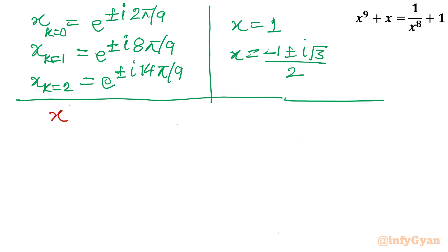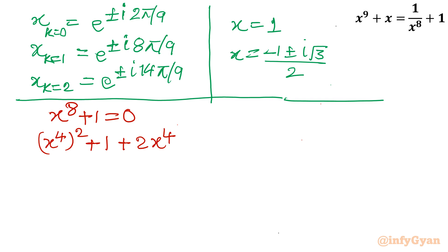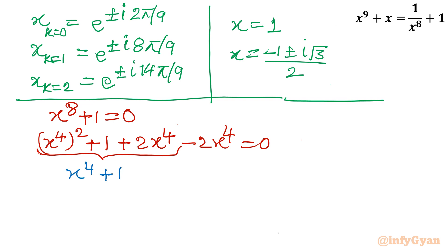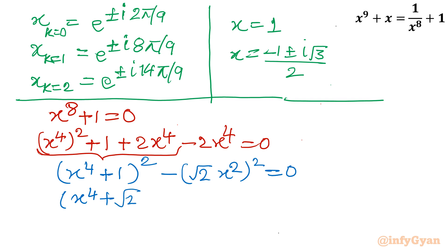Now for the second equation: x^8 + 1 = 0. Using algebra, write x^8 as (x^4)^2 + 1. Adding and subtracting 2x^4 gives (x^4 + 1)^2 - (√2·x^2)^2 = 0. As a difference of two squares, this factors into (x^4 + √2·x^2 + 1)(x^4 - √2·x^2 + 1) = 0.